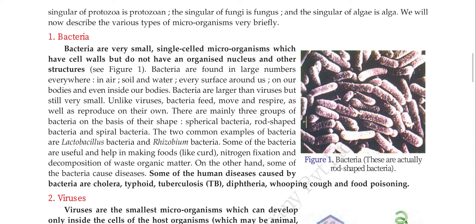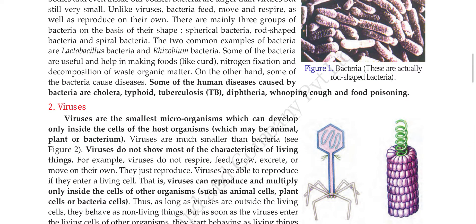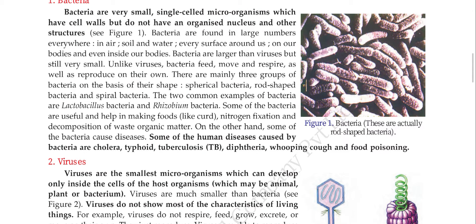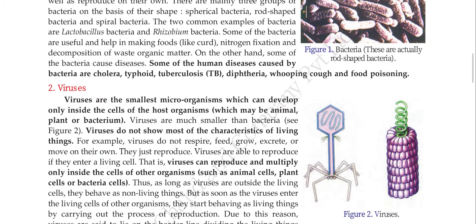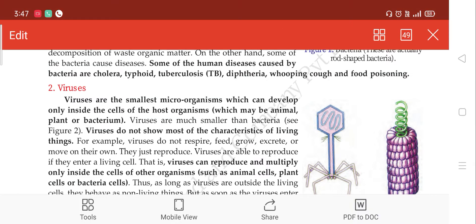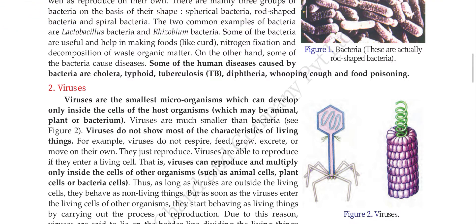Bacteria की बात करें तो कुछ types की bacteria होती हैं। Shape के according divide करें तो: first जो बिल्कुल round/bowl जैसी होती है उसे spherical bacteria कहते हैं। जो diagram में figure number one है — rod जैसी थोड़ी elongated होती है — these are known as rod-shaped bacteria. And spiral, just like a spiral or comma shape, spring की form में होती है — such bacteria are known as spiral bacteria.